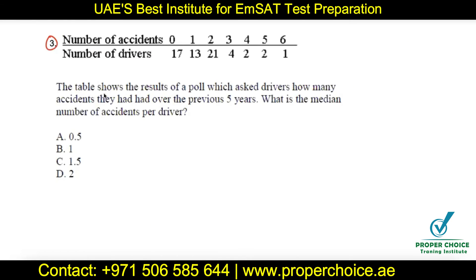Question three: a table shows the results of a poll asking drivers how many accidents they had over the previous five years. What is the median number of accidents? This is a frequency table. Frequency shows repeating values — for example, zero accidents were reported by 17 drivers, and one accident was reported by 13 drivers. By definition, the median is the middle value.